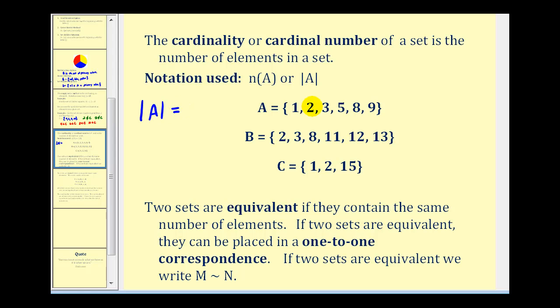So the cardinality of set A would be six because there are six elements in the set. The cardinality of set B would be six as well. And the cardinality of set C would be three.